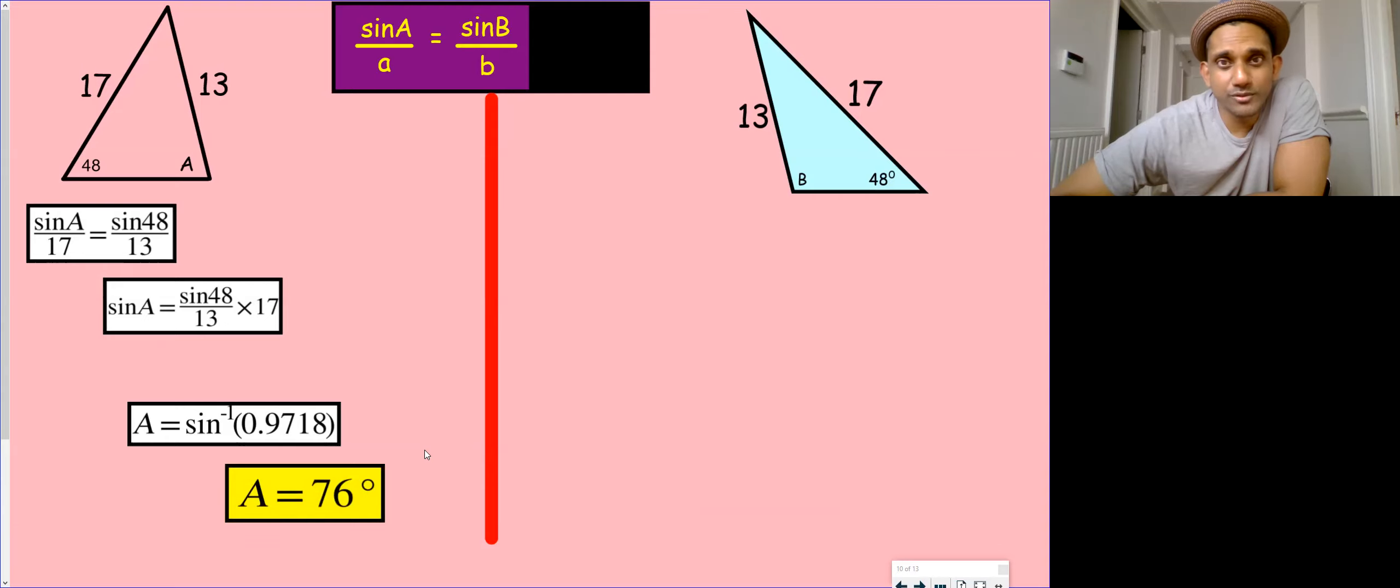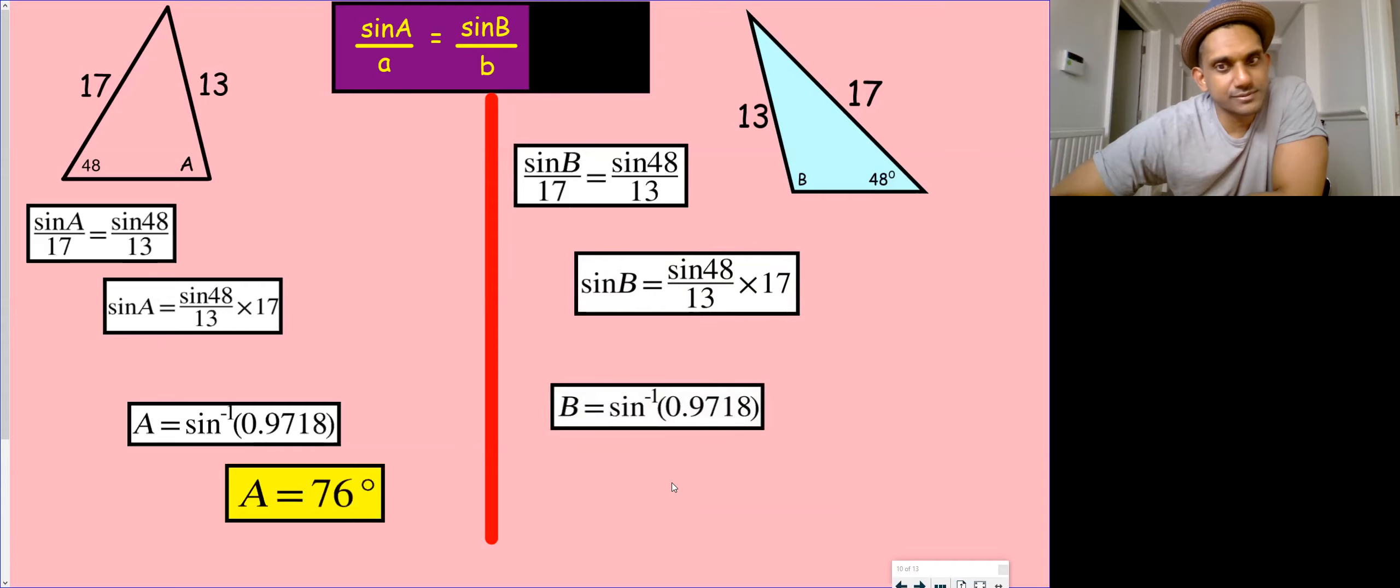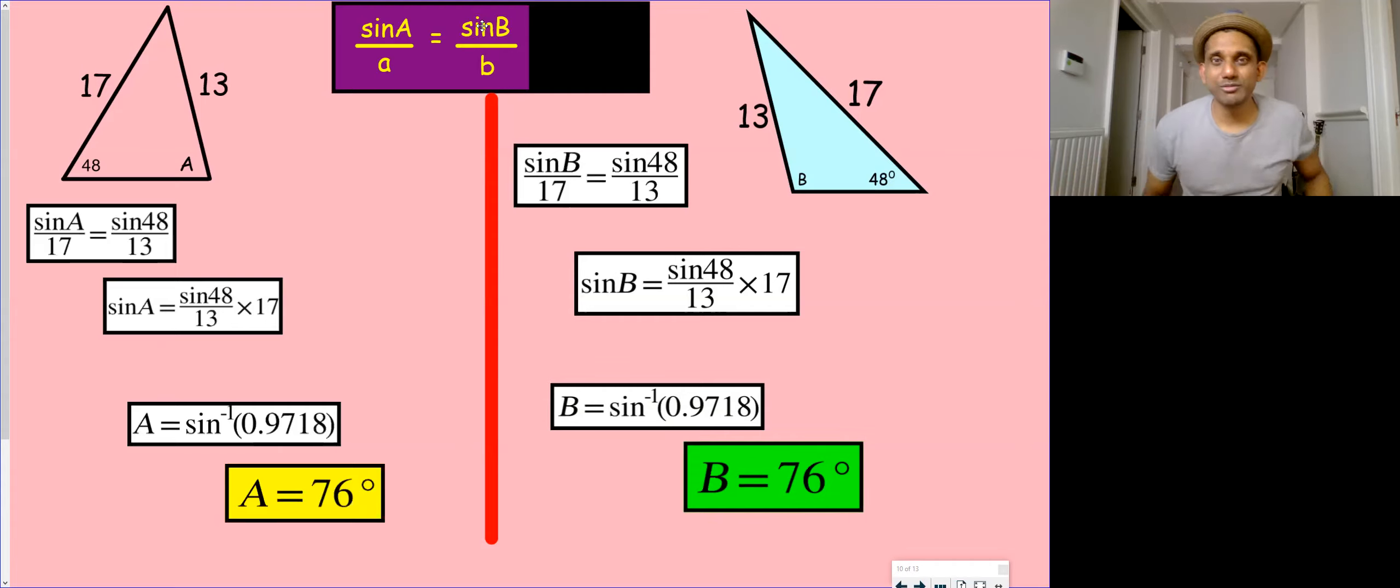And what you would have noticed that would have been interesting is we've got the same numbers, haven't we? We've got sine B instead of sine A, but it's over 17 equals sine 48 over 13. It's going to quickly lead to the same results. Now are those triangles the same? No. So can they both be right? Obviously not.